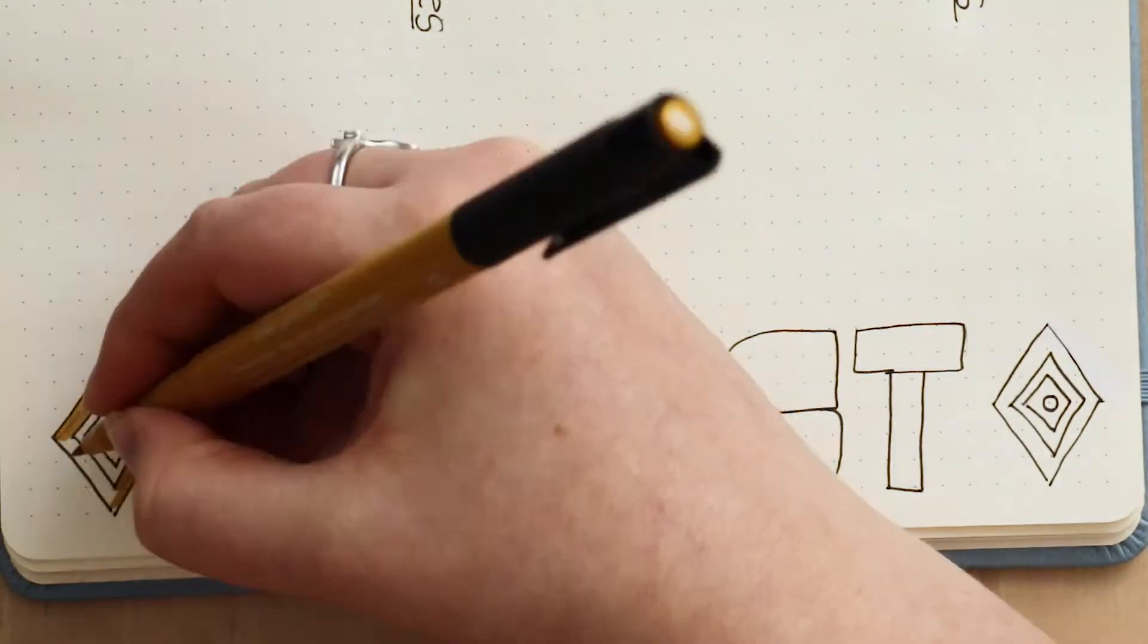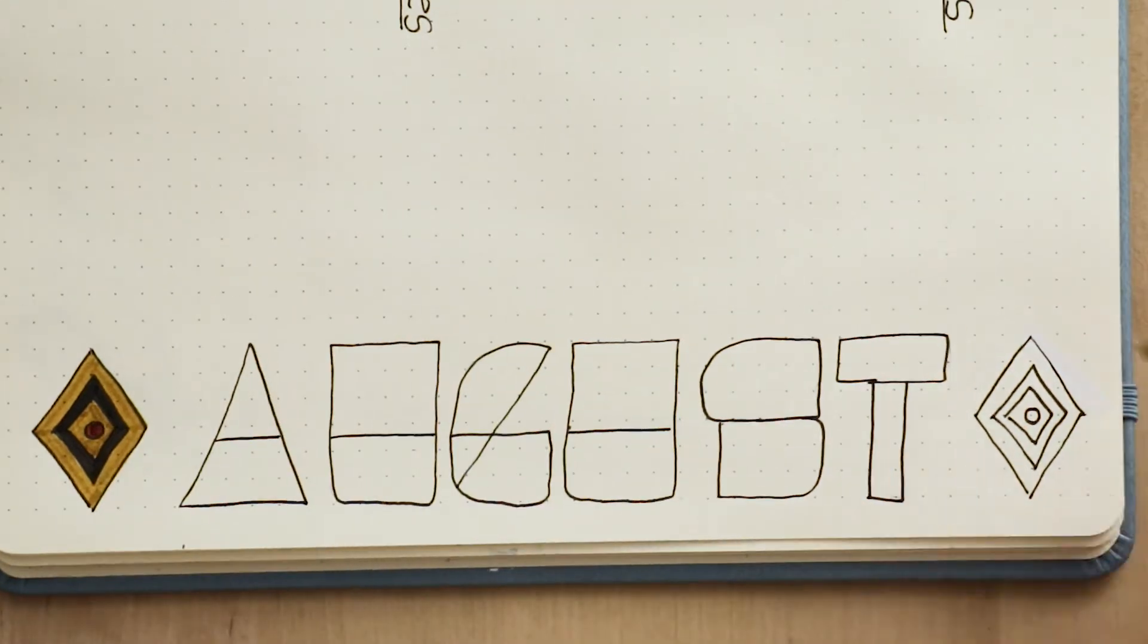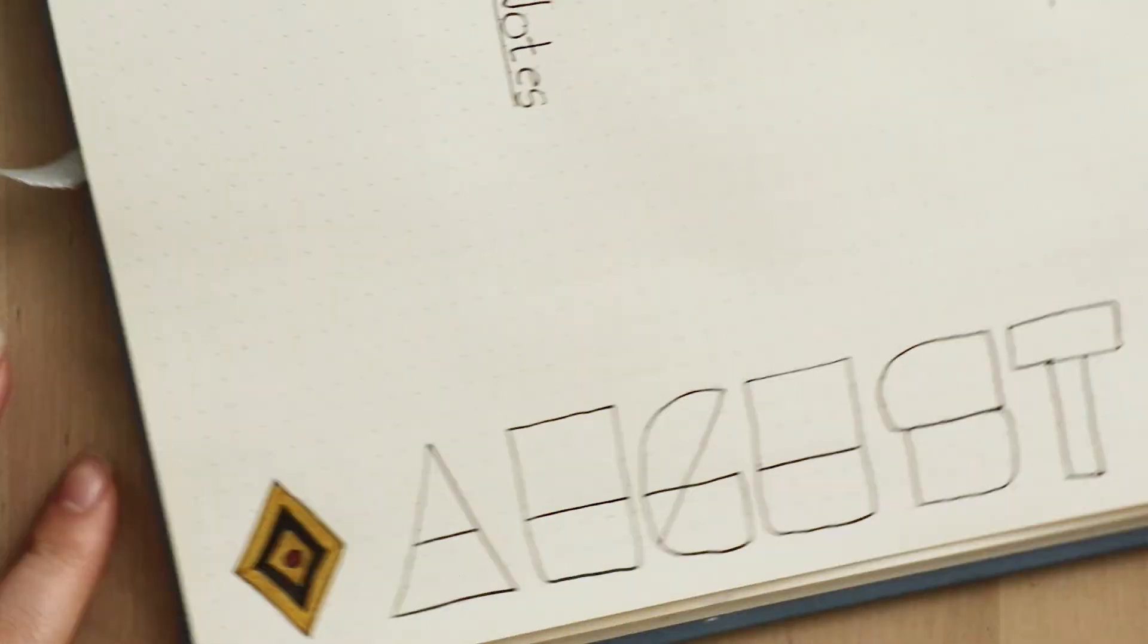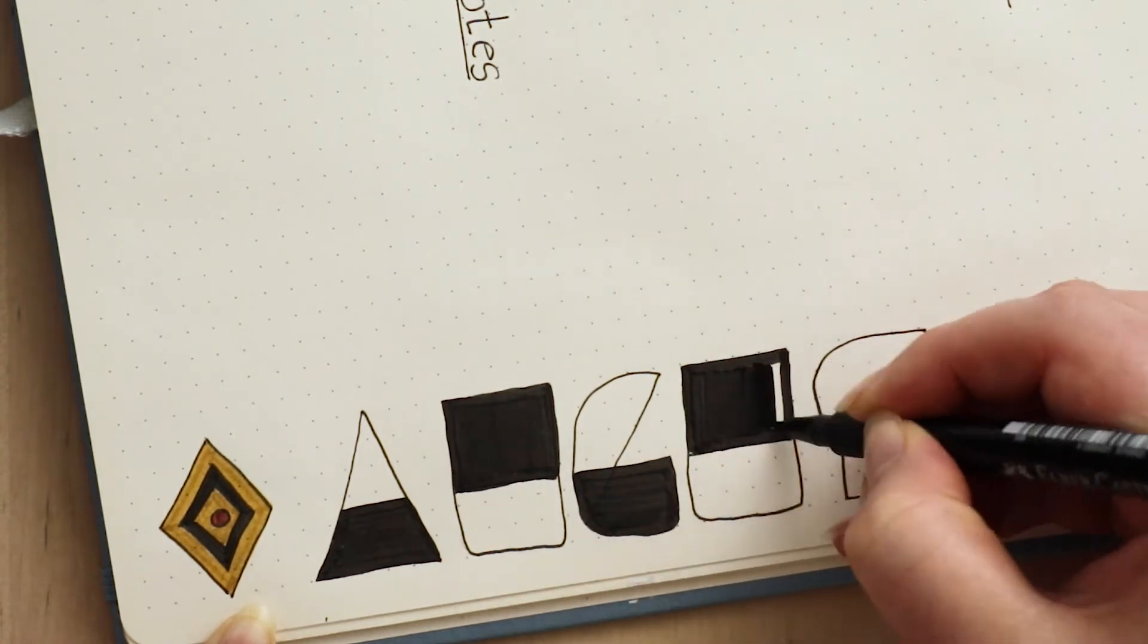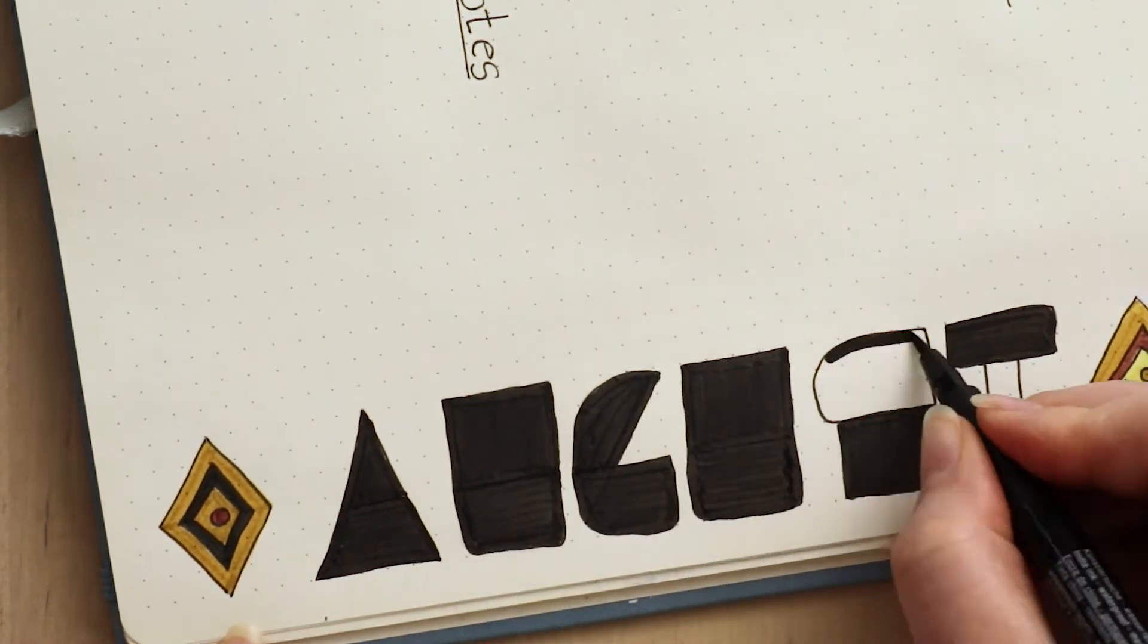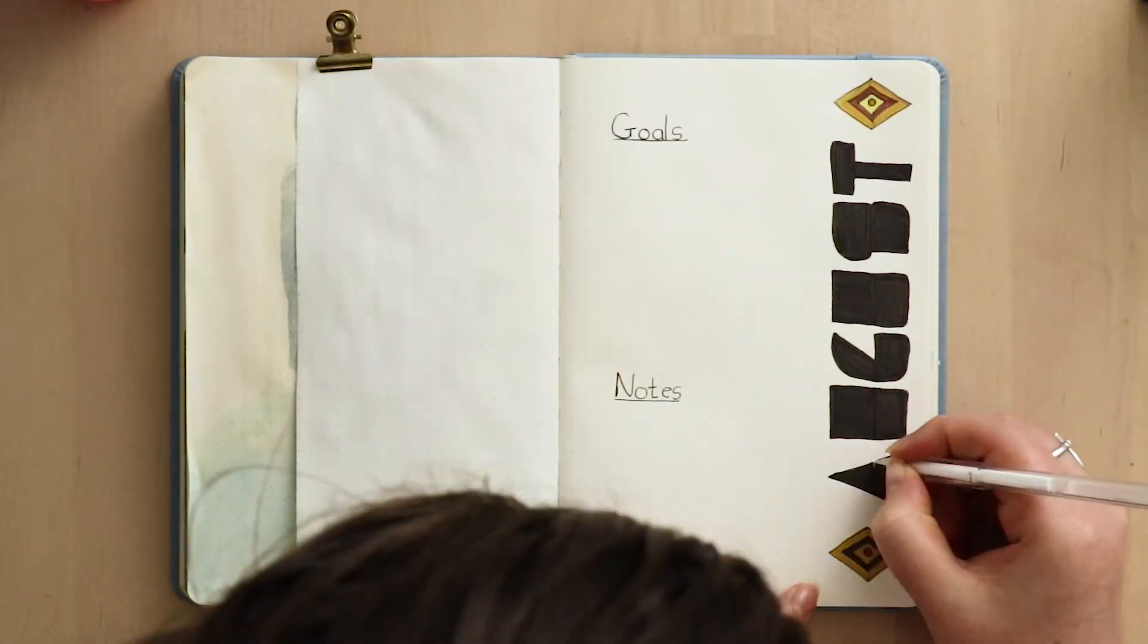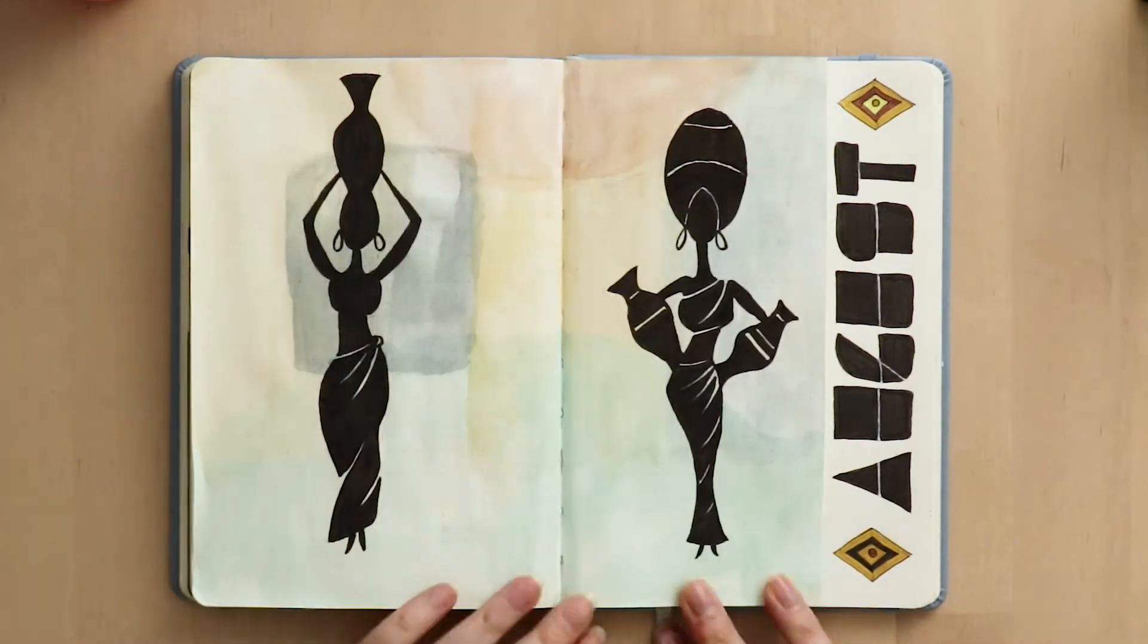So after coloring in these little diamonds which I will use in some of my weekly spreads moving forward, I thought that this headline month looked a bit sad. So I decided to try and color it in and kind of alternate the colors from top to bottom on the different letters, but I thought it looked a bit weird like checker blocky. So I decided to fill it in with a black pen and then go over those lines with a white gel pen just to make it look like letters and it actually worked out quite well.